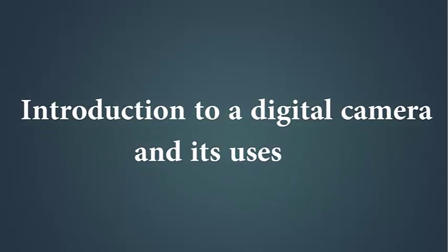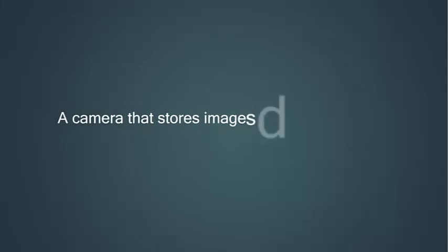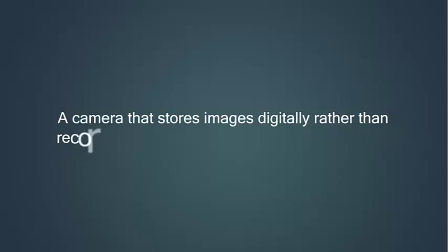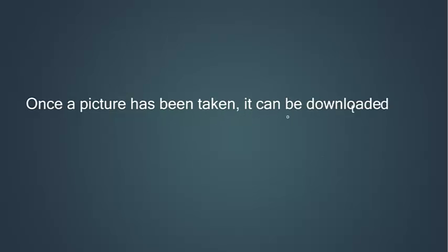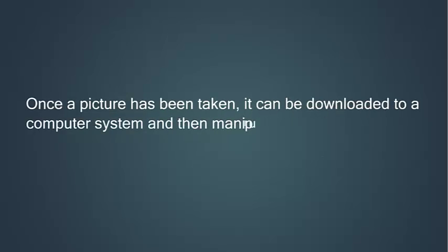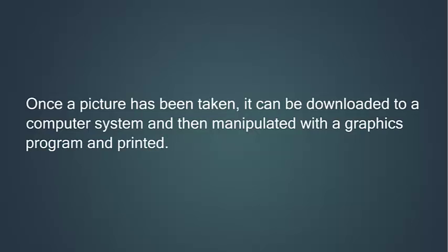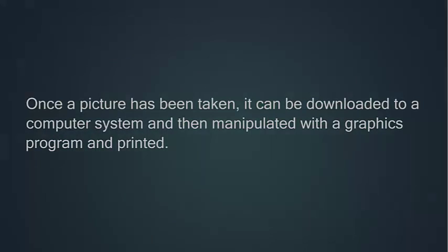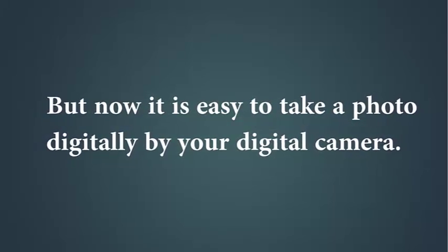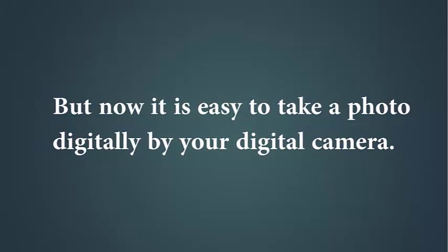Introduction to a digital camera and its usage. A camera that stores images digitally rather than recording them on film. Once a picture has been taken, it can be downloaded to a computer system and then manipulated with a graphics program and printed. But now it is easy to take a photo digitally with your digital camera.